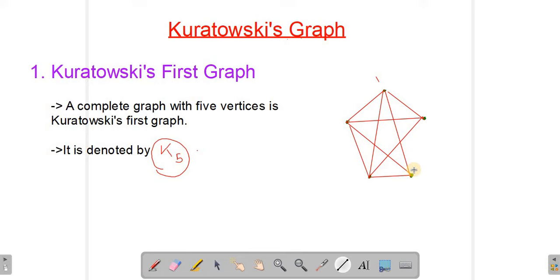So this is exactly what is K5 or Kuratowski's first graph. Here we have five vertices: v1, v2, v3, v4, and v5, in which each and every vertex is connected by an edge. So this is as simple as Kuratowski's first graph. Let's go ahead and see Kuratowski's second graph.